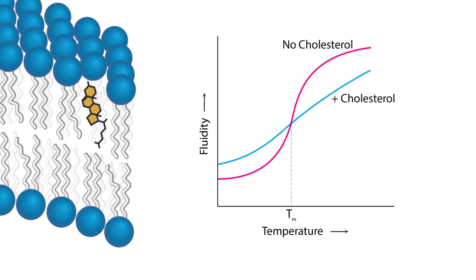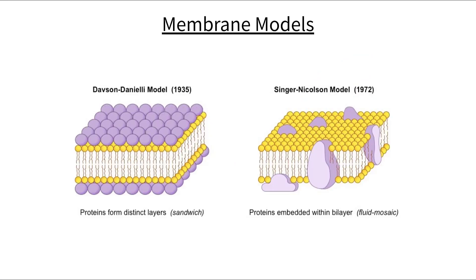This graph shows the impact of cholesterol on membrane fluidity based on the increase in temperature. It helps decrease the fluidity at high temperatures, but it also increases it at low temperatures by separating phospholipid tails to prevent crystallization of the membrane. This keeps the cell membrane working within the normal limits of homeostasis for animals.